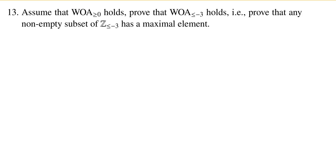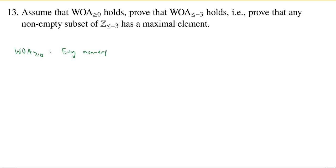Welcome back. This is our video solution to problem 13 from super quiz 3, which was an optional problem assessing the standard of using the well-ordering axiom. In this problem, we're going to assume that the well-ordering axiom for Z ≥ 0 holds. WOA ≥ 0 says every non-empty subset of the non-negative integers Z ≥ 0 has a minimal element — some smallest number in that set.